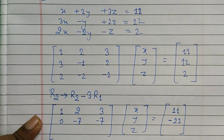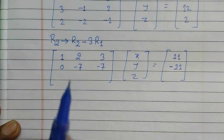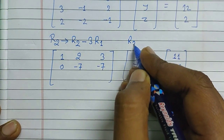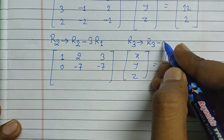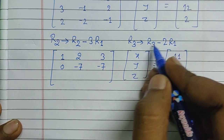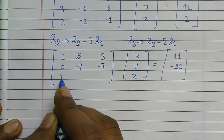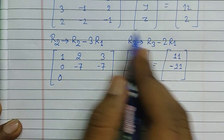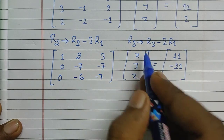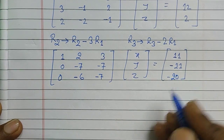Now we apply an operation on the third row. In R3 we have a 2 in the first column, so if we multiply R1 by 2 and subtract from R3 it becomes zero. The operation is R3 implies R3 minus 2R1. The first term becomes 0; minus 2 minus 2×2 gives minus 6; minus 1 minus 2×3 gives minus 7. On the right-hand side, 2 minus 2×11 gives minus 20.